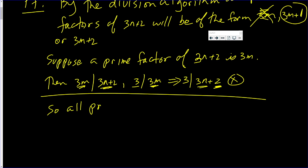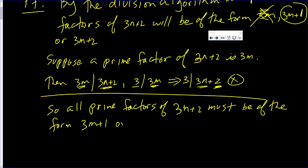So all prime factors of 3n plus 2 must be of the two remaining forms: must be of the form 3n plus 1 or 3n plus 2.